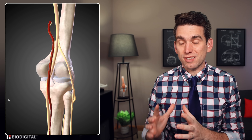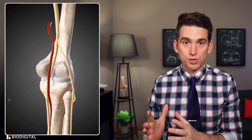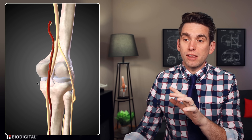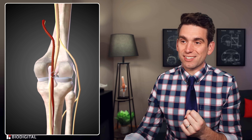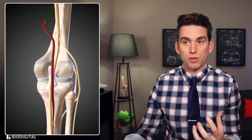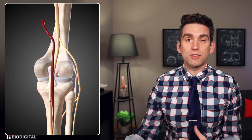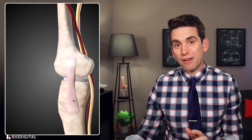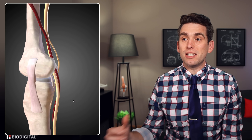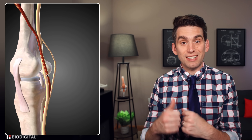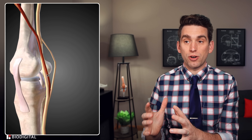Honestly with an injury like this, the number one concern on the doctor's mind is injury to the blood vessels and the nerve. On the back side of the knee we have a big blood vessel called the popliteal artery that transports blood down to the lower leg. With a severe hyperextension, everything is being stretched on the backside of the knee, and you run the risk of actually tearing or injuring this artery.